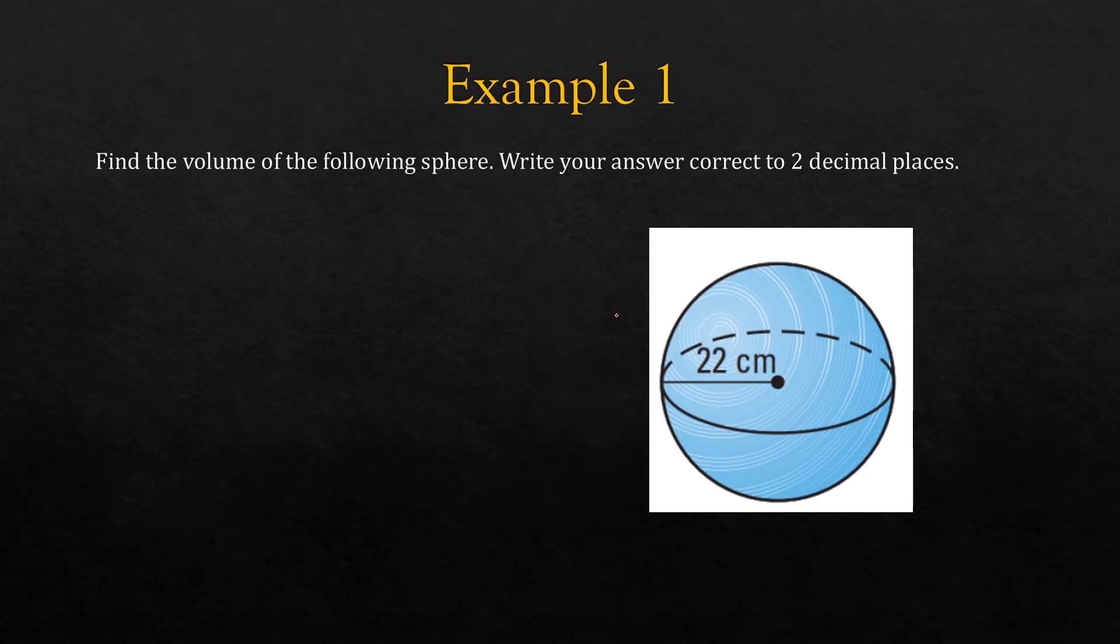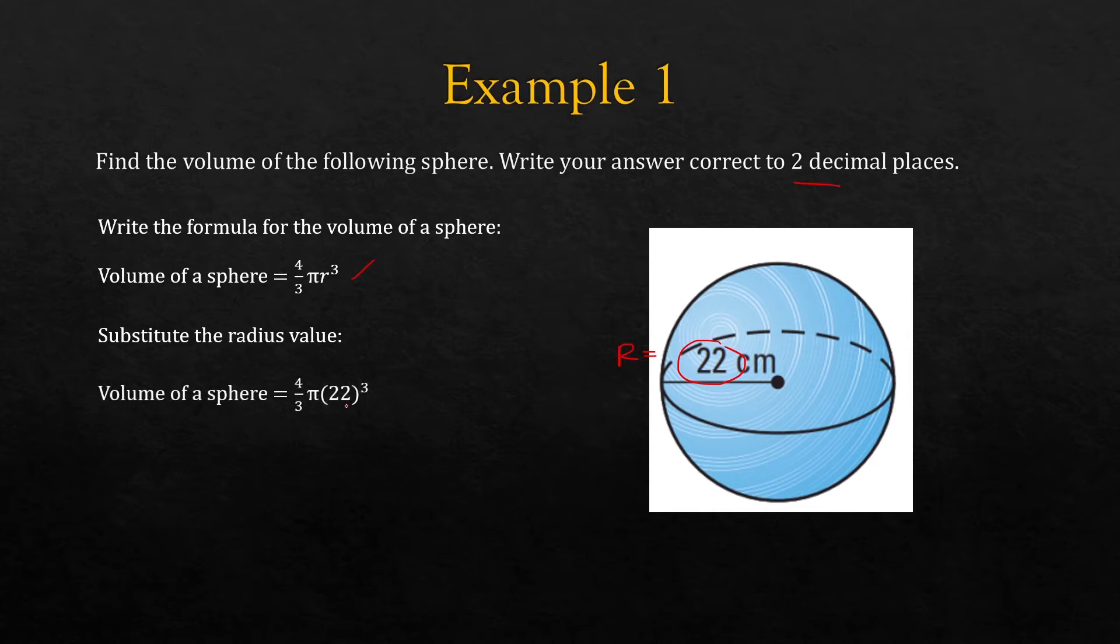So in our first example we want to find the volume of this sphere and we want to write the answer correct to two decimal places. So the first thing you should always do is write your formula which is 4/3 pi r cubed. Substitute in the radius value which is r equals 22.